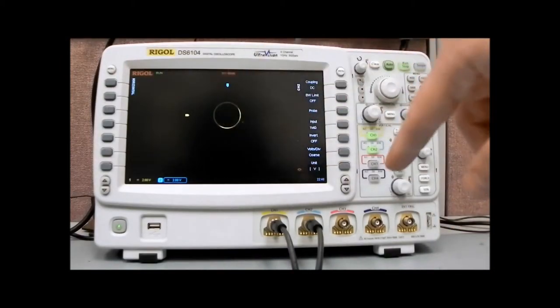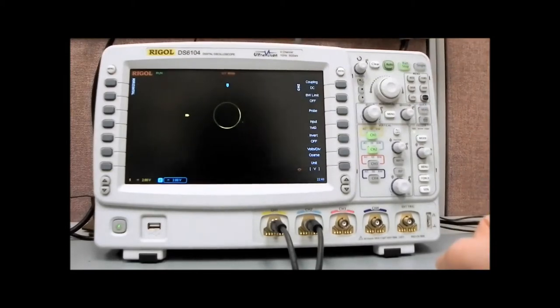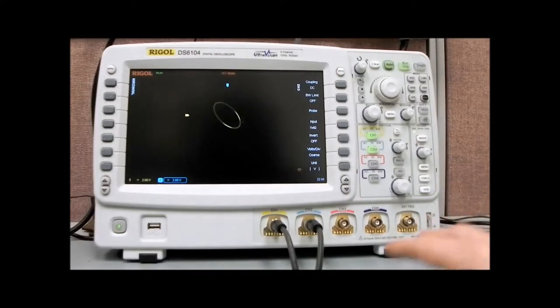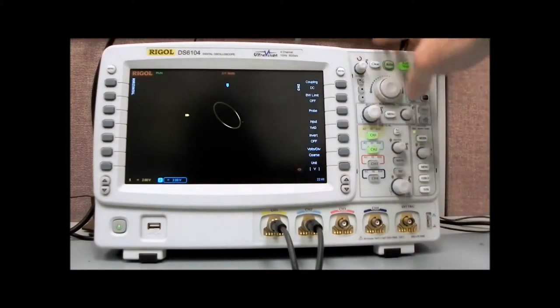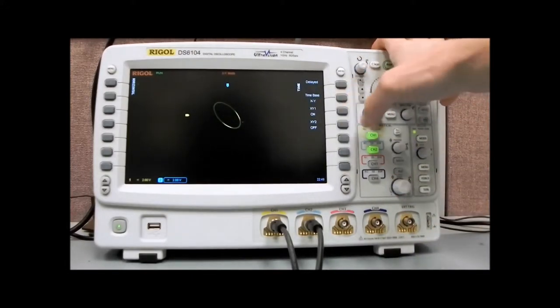So we're plotting X versus Y, and now we get the phase that's going to be a circle when they're 90 degrees out of phase. If we did something like 125 degrees out of phase, you'll see that will turn into an ellipse. So that can be very useful when you want to see the phase differential between two incoming signals. Again, that's the X versus Y mode.